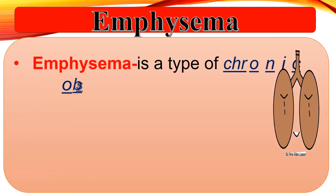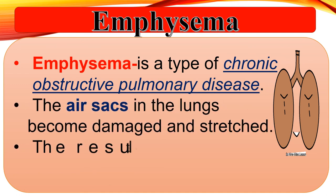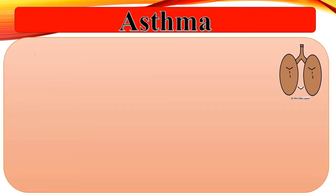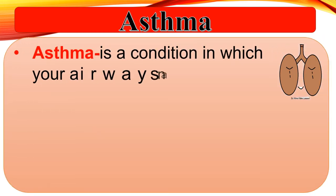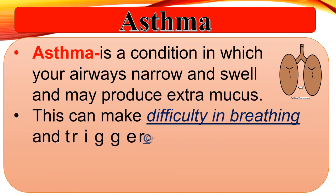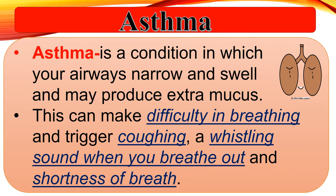Emphysema is a type of chronic obstructive pulmonary disease. The air sacs in the lungs become damaged and stretched, resulting in a chronic cough and difficulty in breathing. Asthma is a condition in which your airways narrow and swell and may produce extra mucus, causing difficulty in breathing, a whistling sound when you breathe out, and shortness of breath.